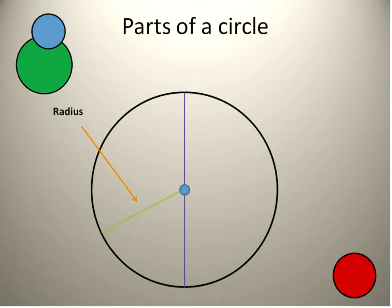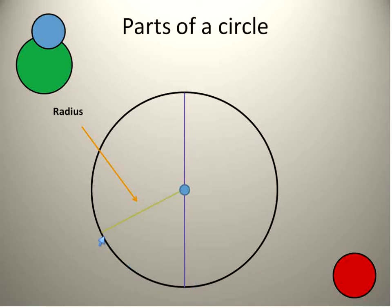A radius, as you can see here — this green line — goes from the center of the circle to the outside, to any point on the circle. That's that consistent distance that, again, you can take a radius, hold it completely steady, spin it all the way around, and you would draw the circle. That's what a radius is: the distance from the center of the circle to any given point on the circle.